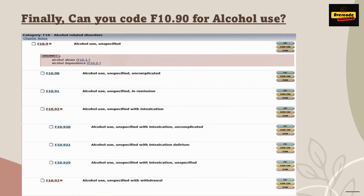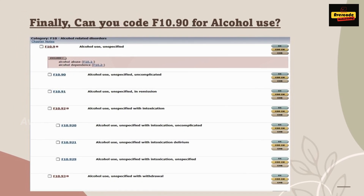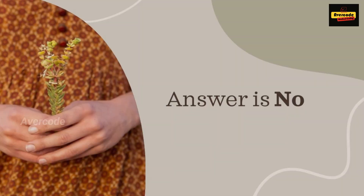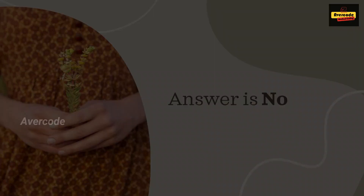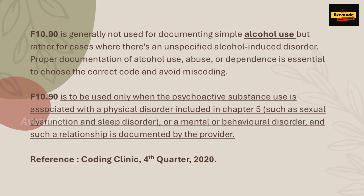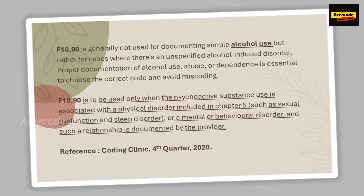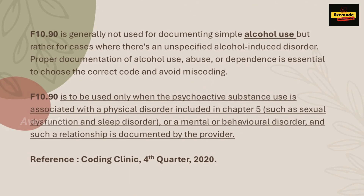Finally, can you code F10.90 for alcohol use? Let's look at the screenshot of alcohol use codes. The answer is no. F10.90 is generally not used for documenting simple alcohol use, but rather for cases where there's an unspecified alcohol-induced disorder. Proper documentation of alcohol use, abuse, or dependence is essential to choose the correct code and avoid miscoding. This code is to be used only when the psychoactive substance use is associated with a physical disorder included in Chapter 5, such as sexual dysfunction and sleep disorder, or a mental or behavioral disorder, and such a relationship is documented by the provider.